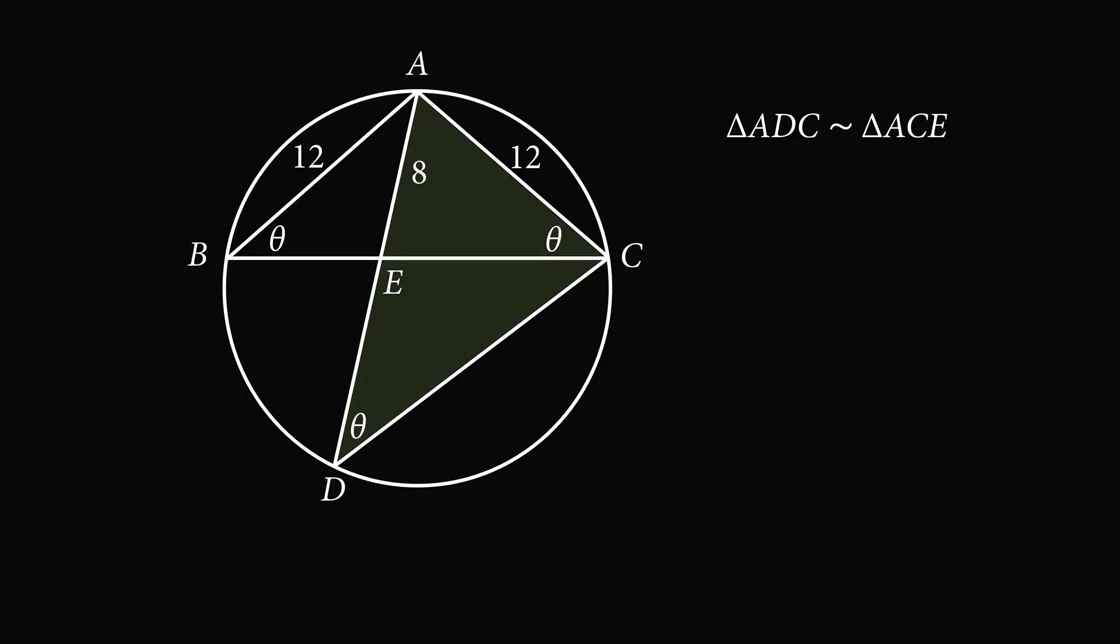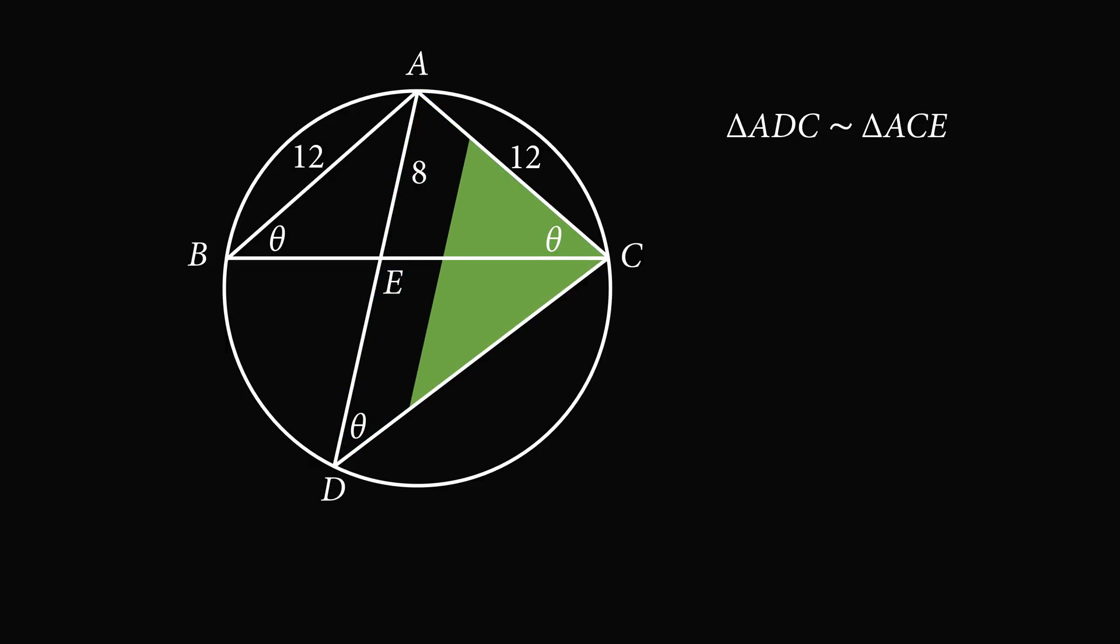To see this more clearly, here's triangle ADC and here's triangle ACE. To see how they're similar, we will scale down this triangle, then we will rotate it, and finally we will flip it.